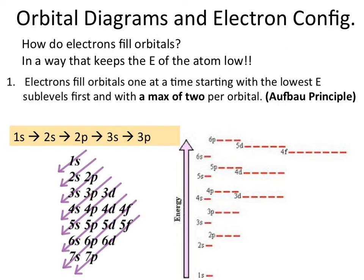How do electrons fill orbitals? Anything that happens in an atom happens in a way that keeps the energy low. The Aufbau principle says that electrons fill orbitals one at a time, starting with the lowest energy sublevels first — beginning at 1s and making our way up through all the other orbitals. As you get farther away from the nucleus you get higher in energy, so we start at the bottom floor and fill up from there. The filling diagram goes 1s, 2s, 2p, 3s, 3p, 4s, etc.